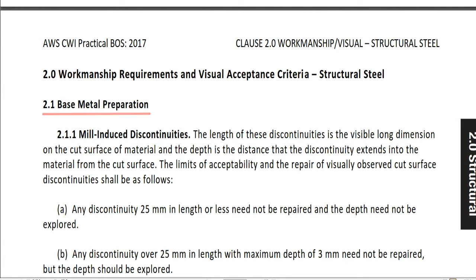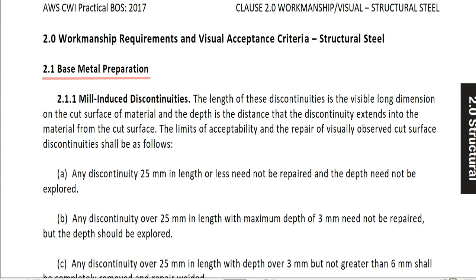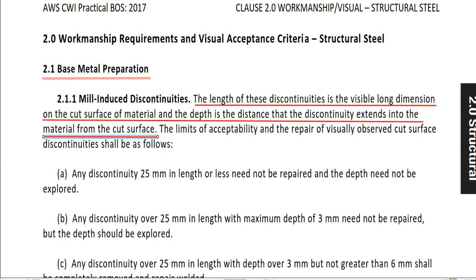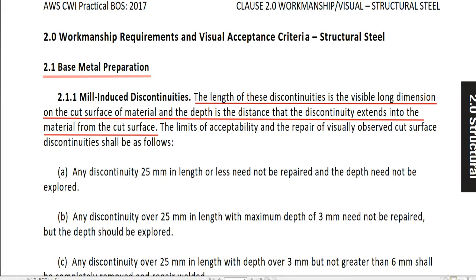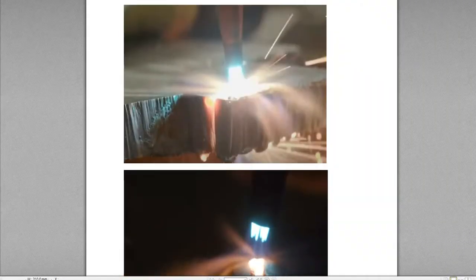Section 2.1, Base Metal Preparation. Section 2.1.1, Mill Induced Discontinuities. The length of these discontinuities is the visible long dimension on the cut surface of the material, and the depth is the distance that the discontinuity extends into the material from the cut surface.